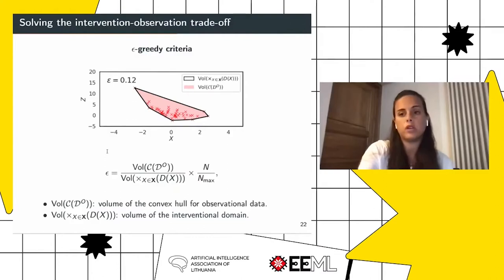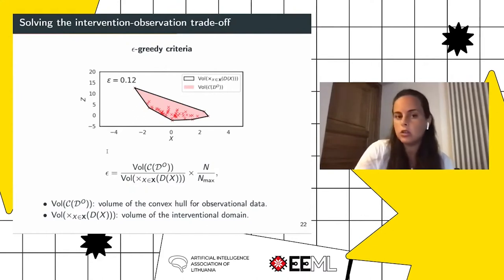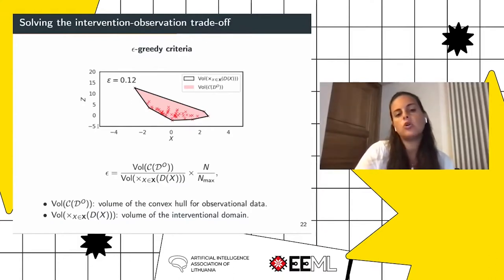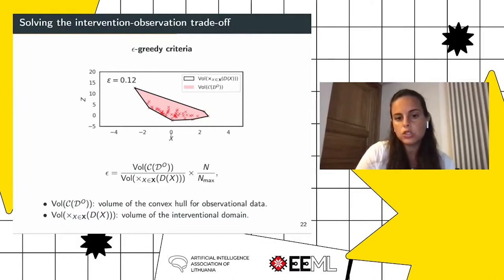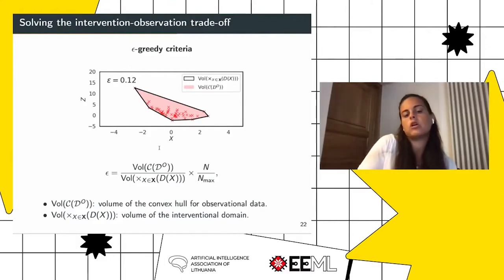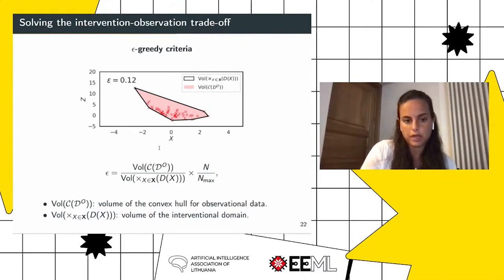There is a final element to consider: observing rather than intervening might be optimal in some cases. So before deciding which variable to intervene on, we need to decide whether to intervene or observe the system. Causal Bayesian optimization introduces what we call an intervention-observation trade-off — analogous to the exploration-exploitation trade-off in standard Bayesian optimization. We address this through an epsilon-greedy criterion inspired by reinforcement learning. At every step, we decide whether to intervene or observe based on epsilon, computed by looking at how well observational data cover the interventional domain — specifically, the volume of the convex hull of observational data relative to the volume of the interventional space.